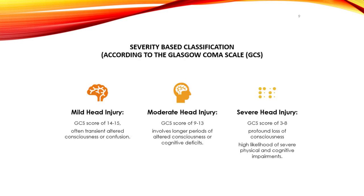Patients should be categorized according to the severity of TBI. Those with a GCS of 14 or 15 are categorized as mild TBI, while those between 9 and 13 are moderate TBI. Patients with a GCS of less than 9 are severe TBI patients.